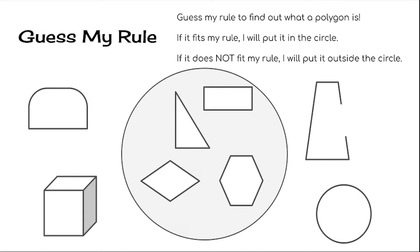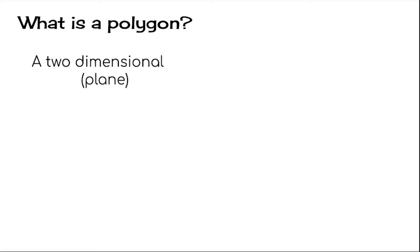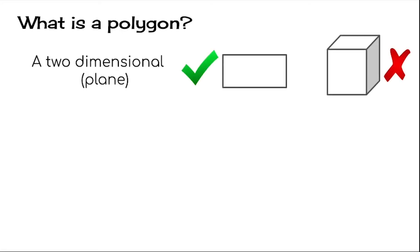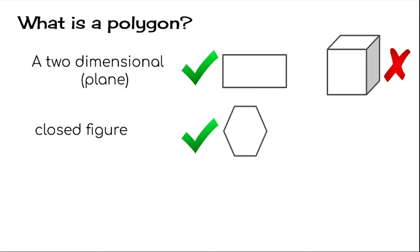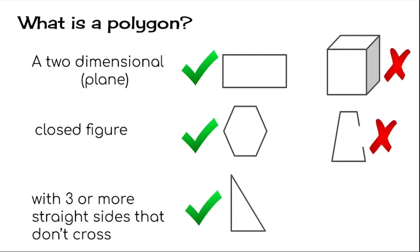Here we go — what is a polygon? The first thing about polygons is that they are two-dimensional — they are plane figures. So a rectangle is a polygon, but a cube is not a polygon because it's 3D. Polygons are closed figures — that means they don't have any openings. This hexagon is a polygon, but this thing has an opening in it — it's not a polygon. And the last rule for polygons is that they have 3 or more straight sides that don't cross. So a triangle is a polygon, but a circle isn't because its sides are not straight.